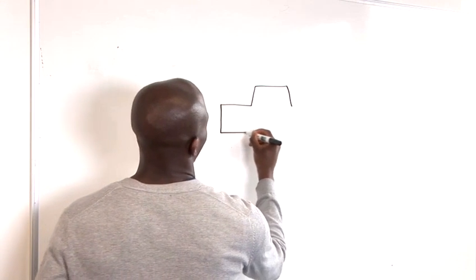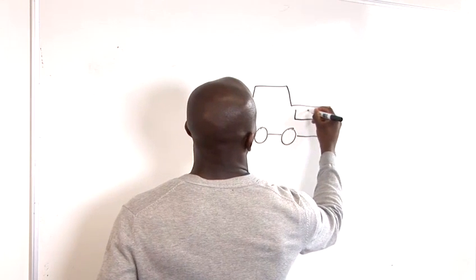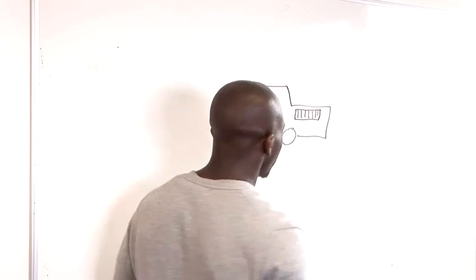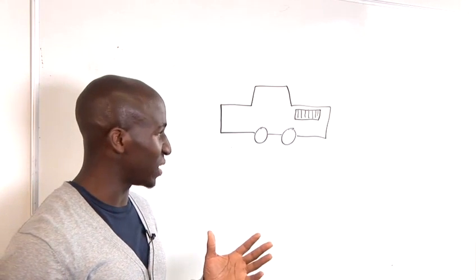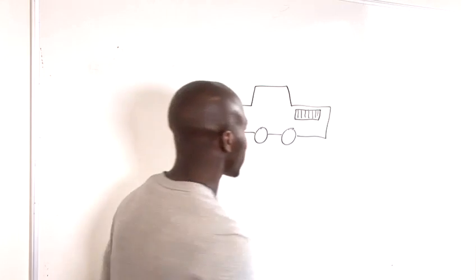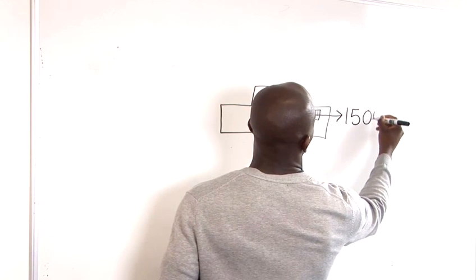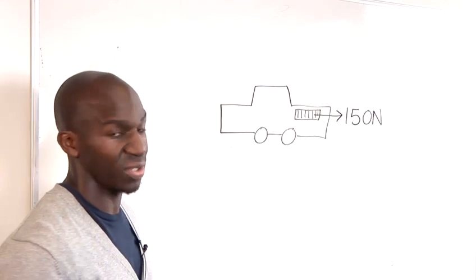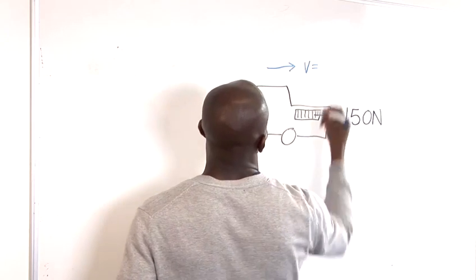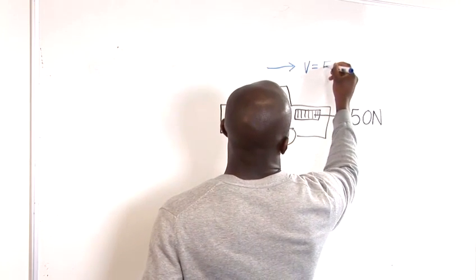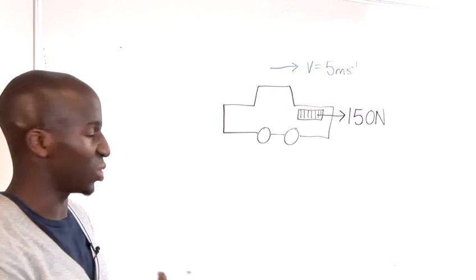So I'll just draw a car for you. And we have the engine here. Now just imagine if the engine of this car produces a force of say 150 newtons. And then the velocity of the car is equal to 5 meters per second. We want to now try to calculate the power associated with the motion of this car.